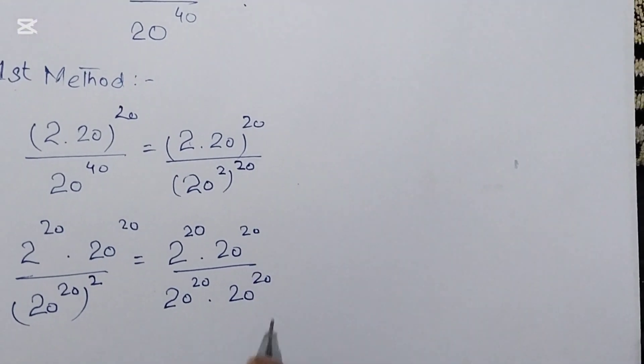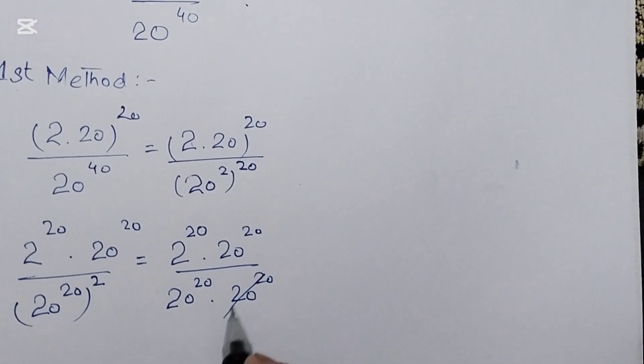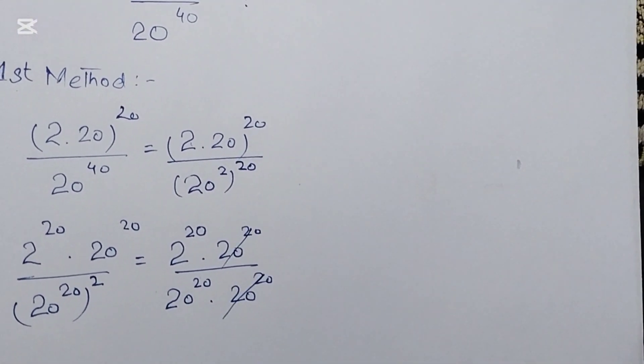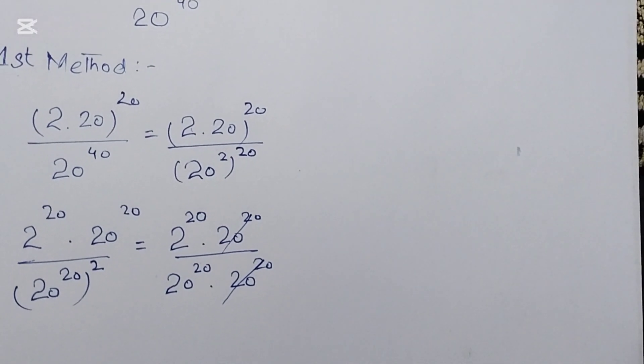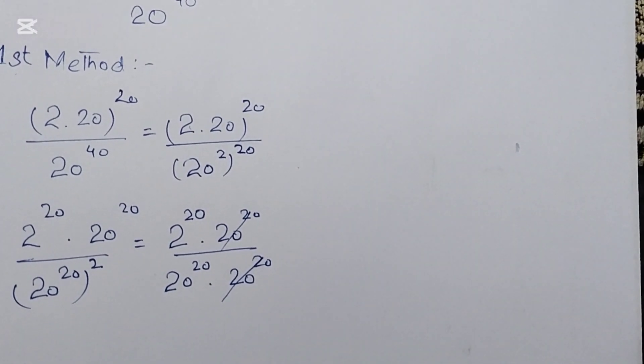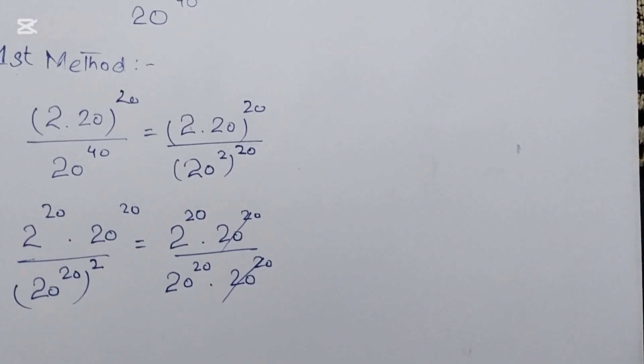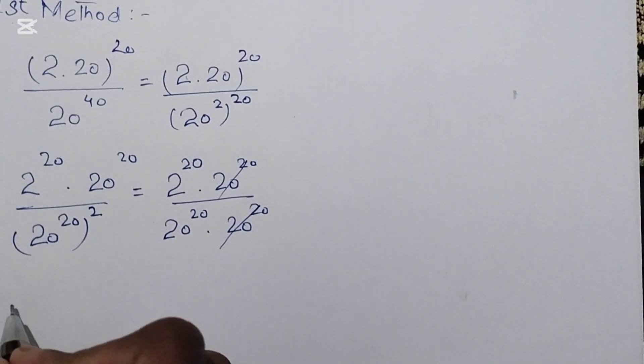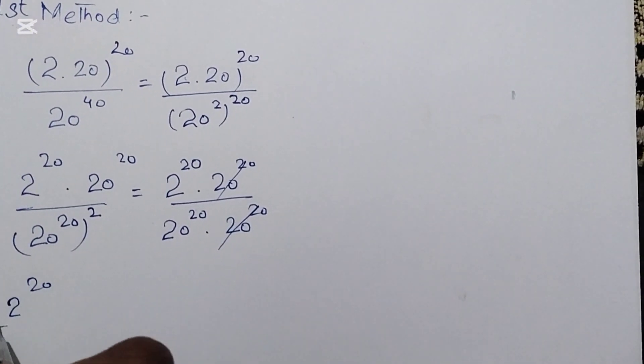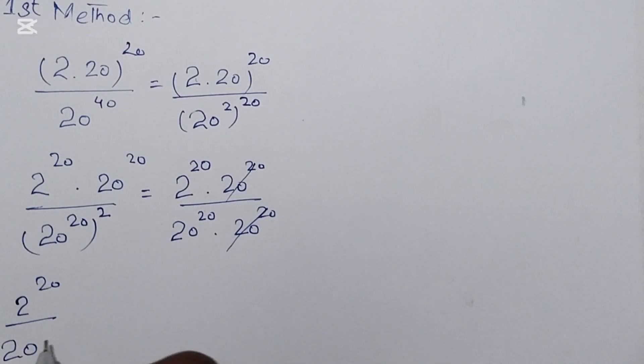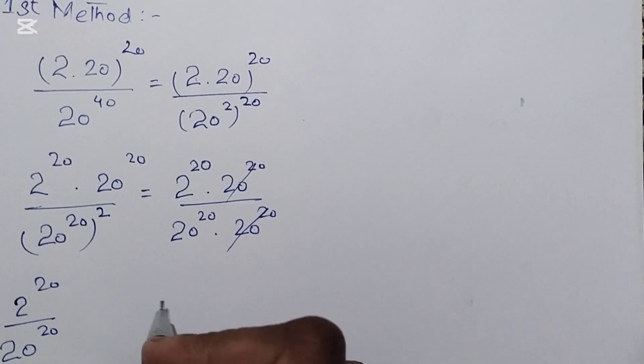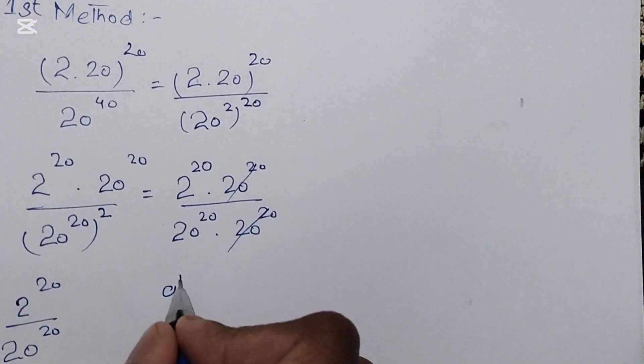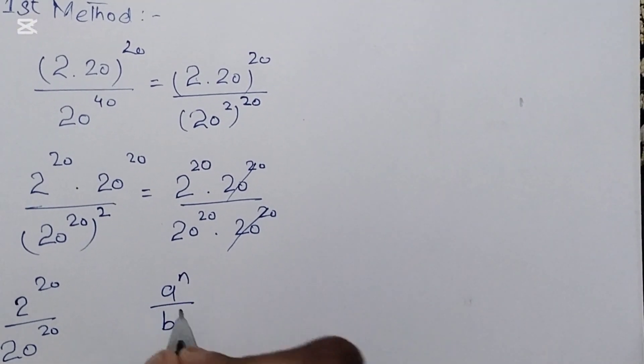This 20^20 can cancel with this 20^20. We get 2^20 over 20^20. It is a formula that a^n over b^n can be written as (a over b) whole power n.